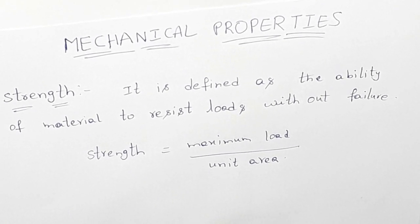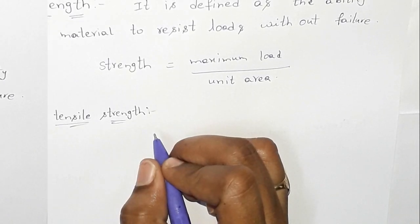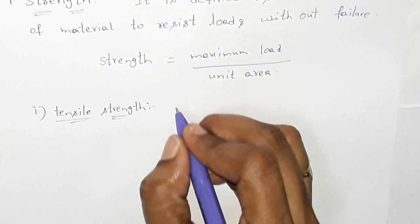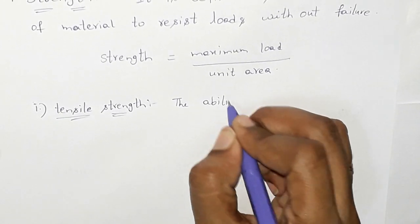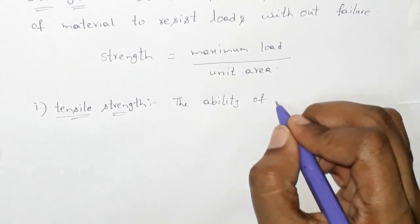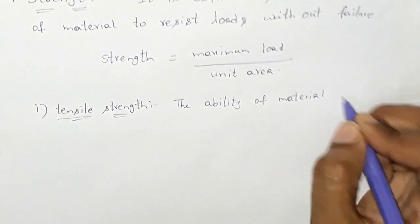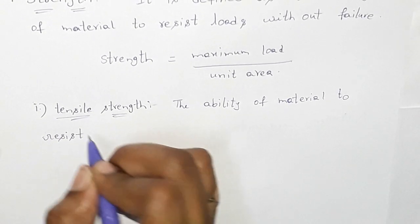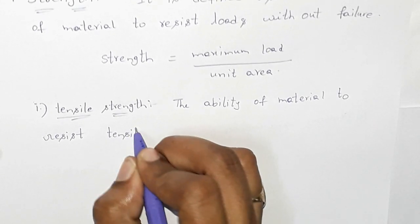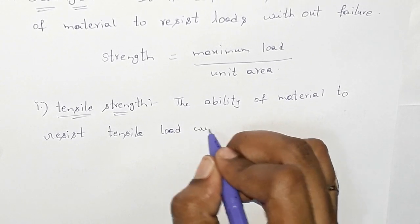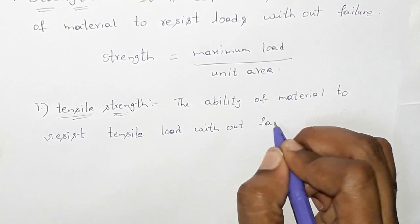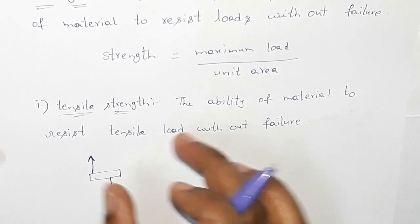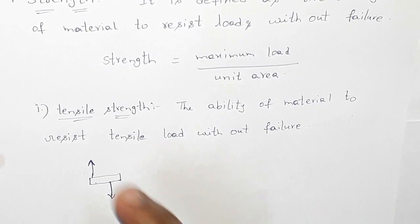Tensile load can cause failure. Tensile strength is defined as the ability of a material to resist tensile load without failure. We are talking about tensile strength — how much tensile load will the material resist?